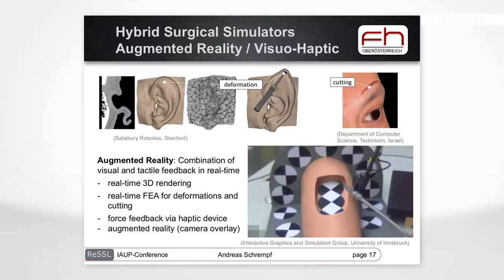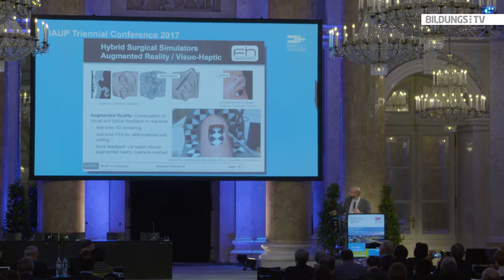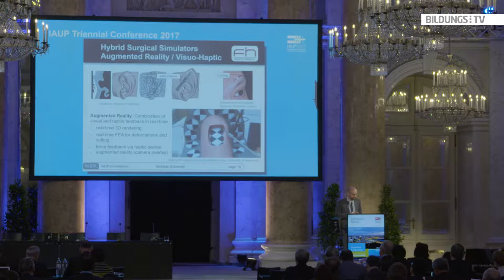For augmented reality, it is very important to achieve interaction between the physical mannequin and the computer model. Here is an example with a knee phantom with markers tracked by a camera system. The person wears a head-mounted display and, based on that tracking information, receives additional overlay information. The physical soft tissue part of the knee is replaced by a virtual software representation, and with a haptic instrument, you can train and simulate cutting of soft tissue.